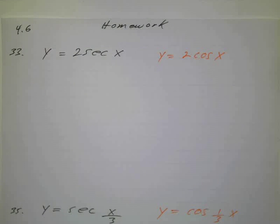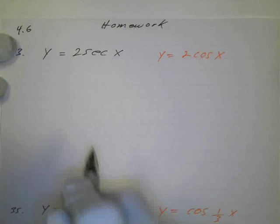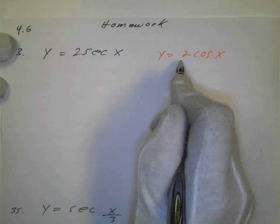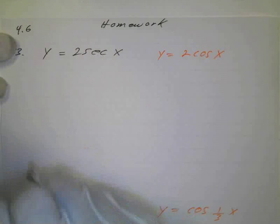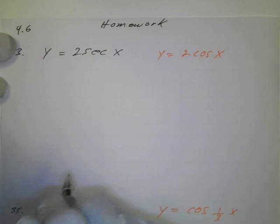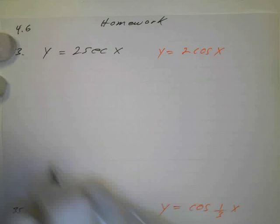Okay, here's some more of section 4.6. This is number 33, so we're going to do the secant. That's the reciprocal of the cosine. Remember S and C go together, so we went over the cosine, so we graph the cosine first. That would be our reference function, and we have basically an amplitude of 2.